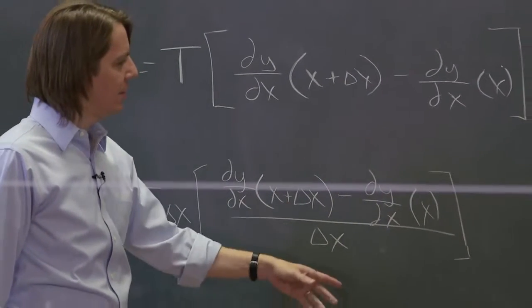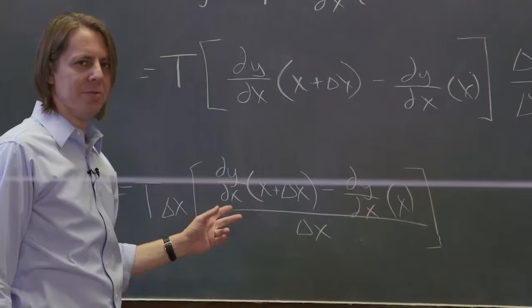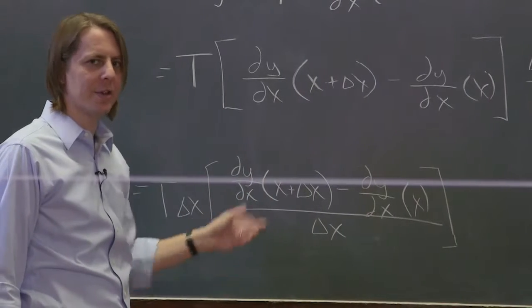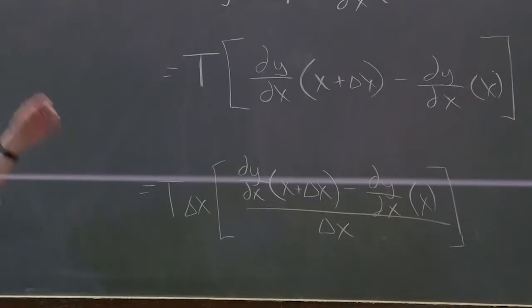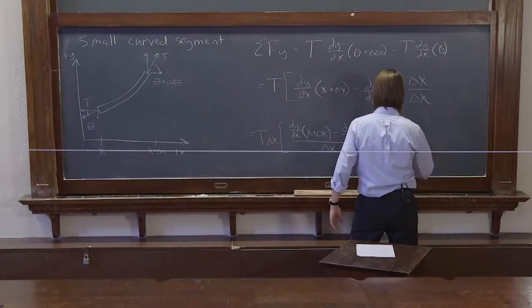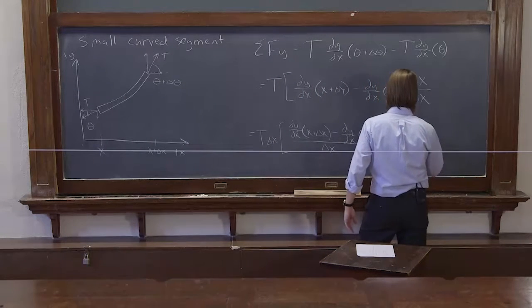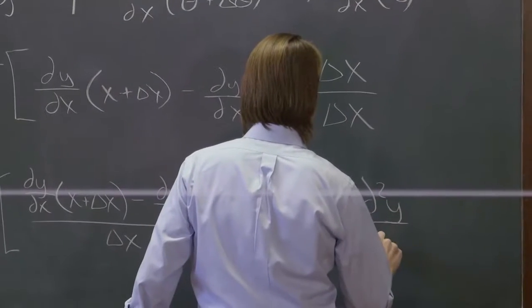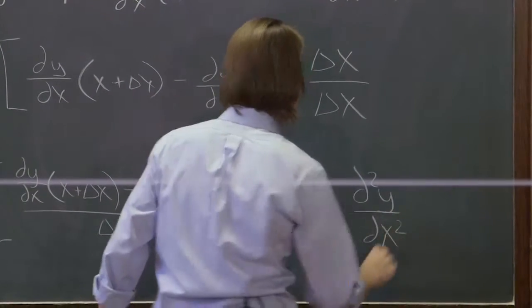So this is a derivative again, but it's a derivative of a derivative. Well, a derivative of a derivative is a second derivative. So what we found is that the total force on the y equals the tension times the delta x times the second partial derivative with respect to x, of y with respect to x.